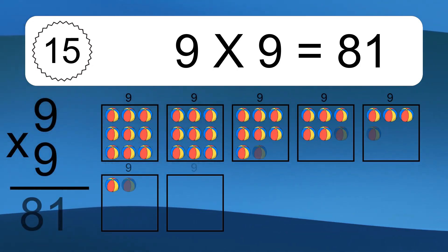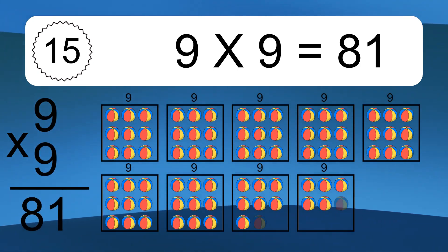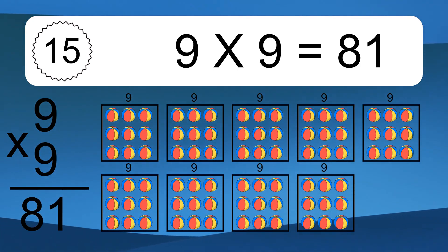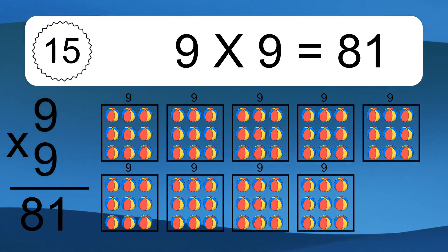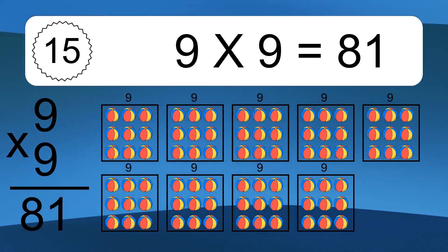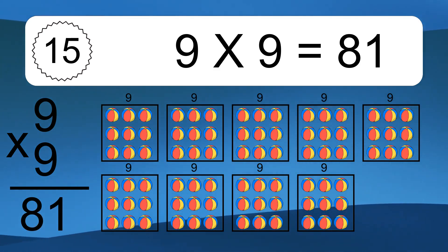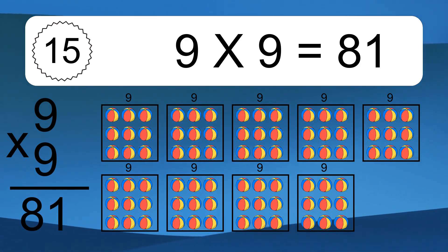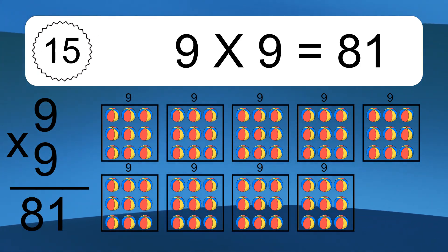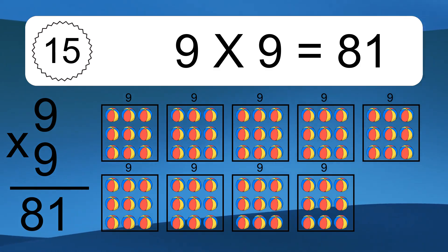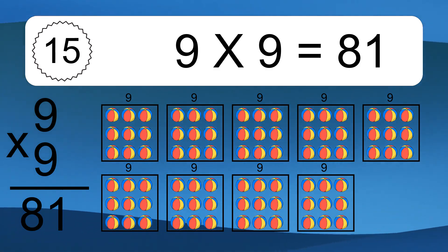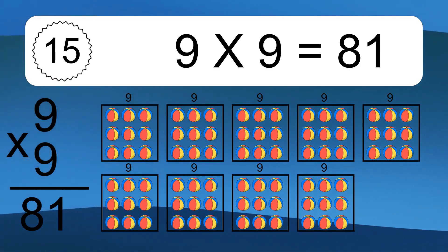9 times 9 equals what? 9 times 9 equals 81. We have 9 boxes and each box has 9 colorful balls inside. If you count all the balls in all the boxes together, you will have 9 times 9 balls. This equals 81 balls.